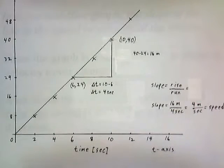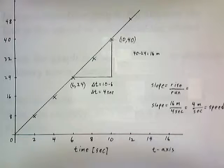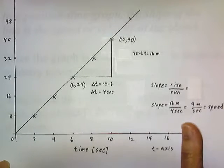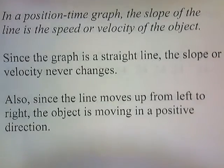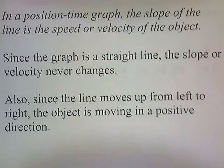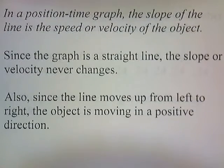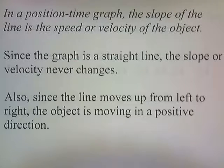The slope represents the change in position over time, which is the definition of speed. In a position-time graph, the slope of the line is the speed or velocity of the object. Since the graph is a straight line, the slope or velocity never changes. Also, since the line moves from left to right, the object is moving in a positive direction.